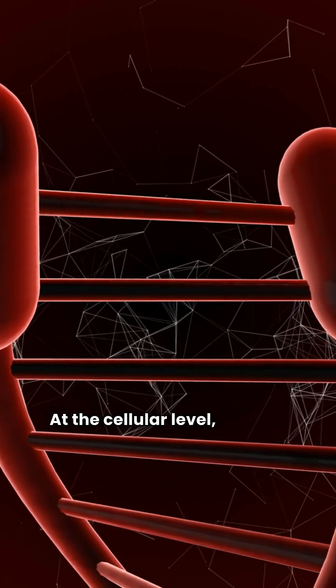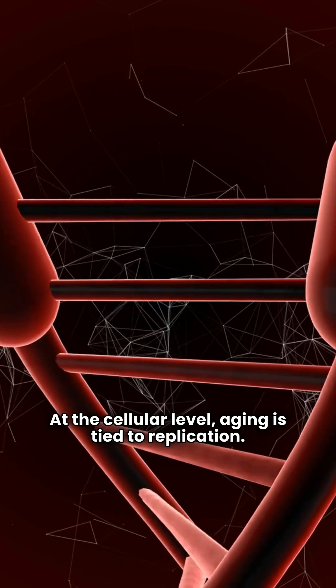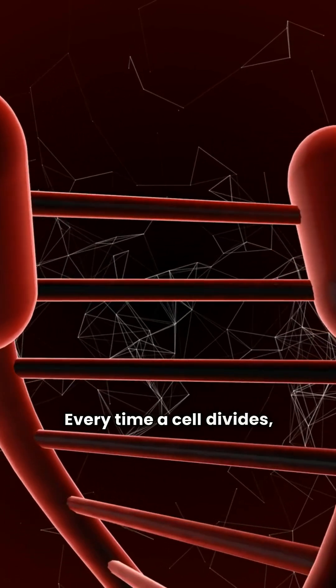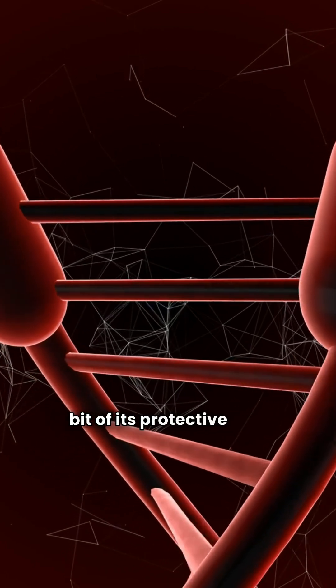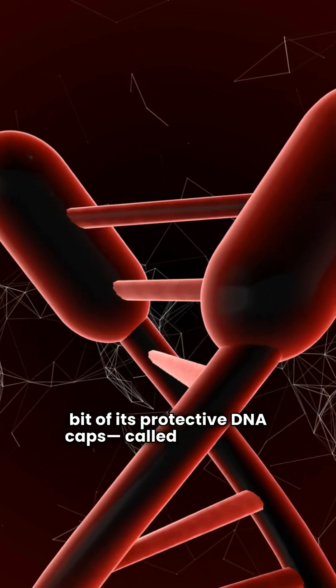At the cellular level, aging is tied to replication. Every time a cell divides, it loses a bit of its protective DNA caps, called telomeres.